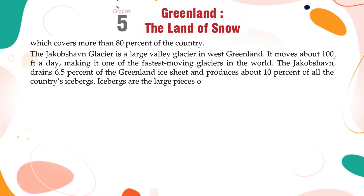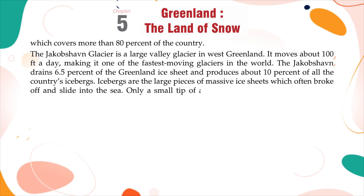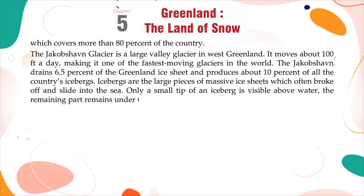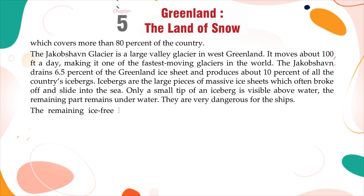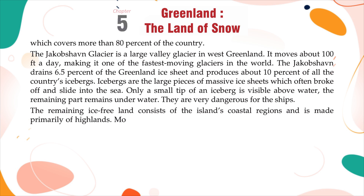The Jakobshavn Glacier drains 6.5% of the Greenland ice sheet and produces about 10% of all the country's icebergs. Icebergs are the large pieces of massive ice sheets which often break off and slide into the sea. Only a small tip of an iceberg is visible above water; the remaining part stays underwater. They are very dangerous for ships.